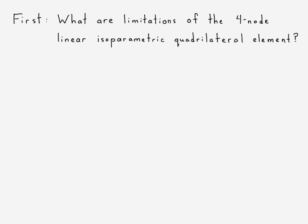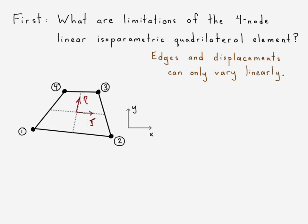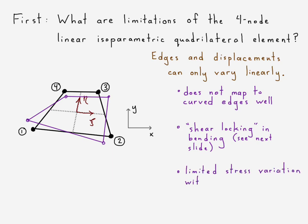What are the limitations of the four-node linear isoparametric quadrilateral element? We recognize that these edges must remain straight, which means they can only vary linearly. So one of the downfalls is that in its basic shape, it cannot easily map to curved edges, like a fillet. And when it deforms, especially with bending, shear locking occurs. Also, there's only a limited stress variation, so it might have difficulty capturing stress concentrations.